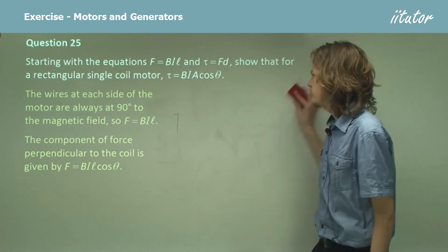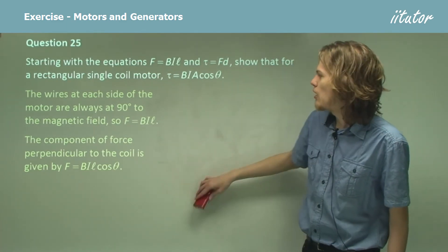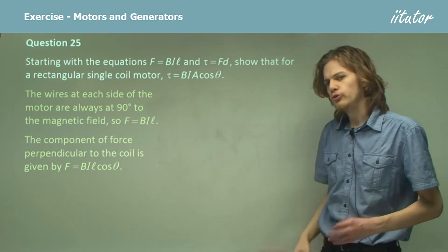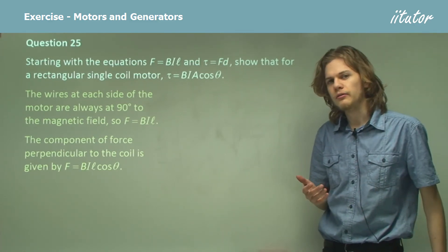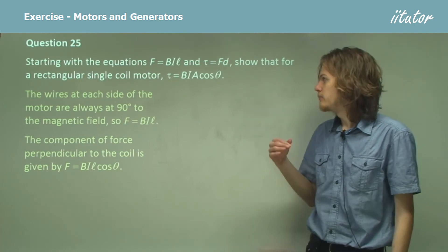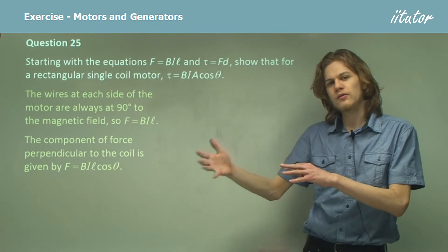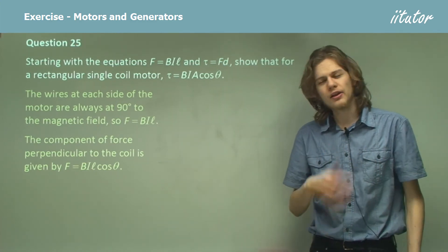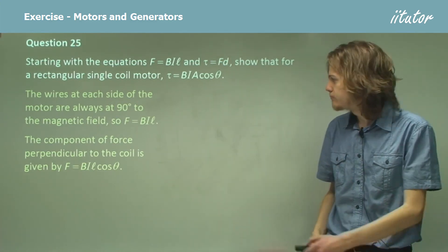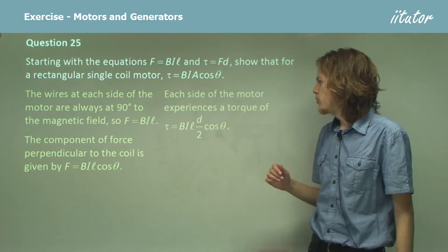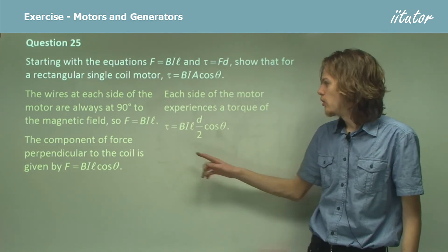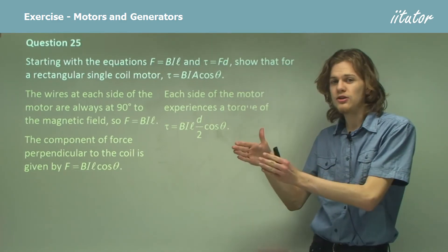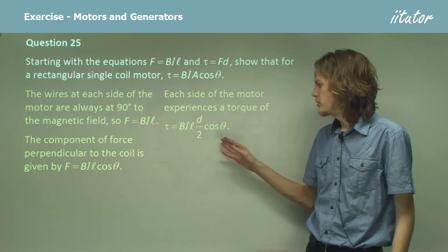So we're getting pretty close to our equation for torque now. To find the torque, we need to find the distance between the axis of rotation and where we're pressing it, and that will simply be half the length of the coil. So each side of the motor experiences a torque of BIL times the distance from that edge of the coil to the center times cosine theta.